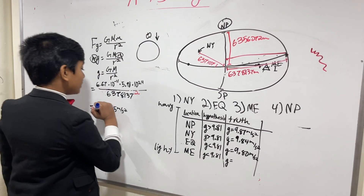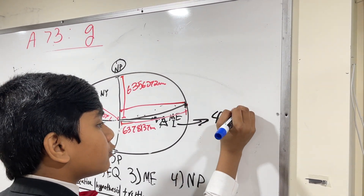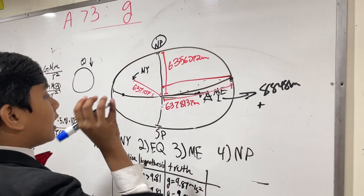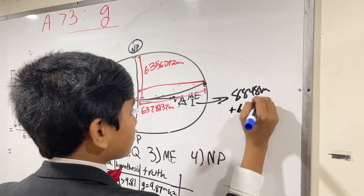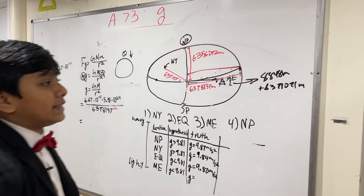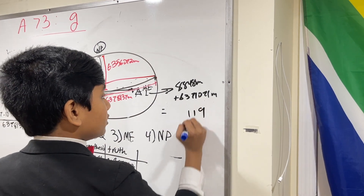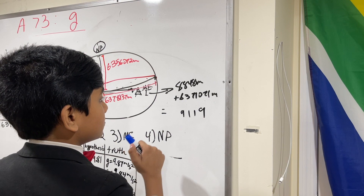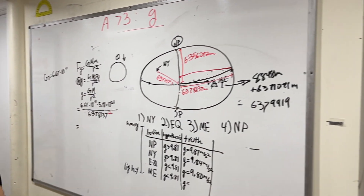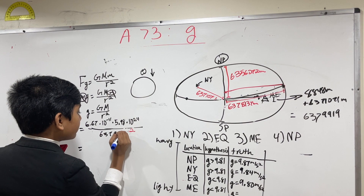What happens when we plug in Mount Everest? Since we're at the tippy top, we've got to account for the 8,848 meters. So we take 6,371,071 — using the average value, because no one has time to figure out the exact distance from the tippy top of Mount Everest to the core — and add 8,848 to get 6,379,919. So we're dividing by 6,379,919 squared.